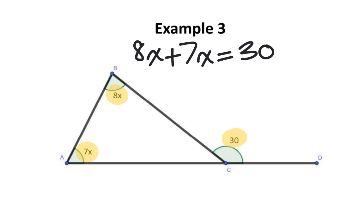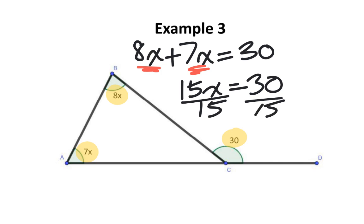We can begin to solve this equation by simplifying the like terms on the left side. We know that 8x plus 7x gives you 15x. Now, to solve the equation, we're going to divide both sides by 15. Those 15 are going to cancel out and that gives us a value of 2. Therefore, x is equal to 2.